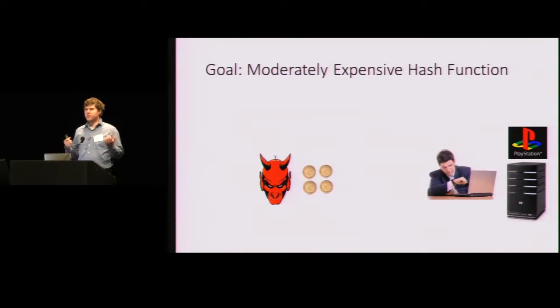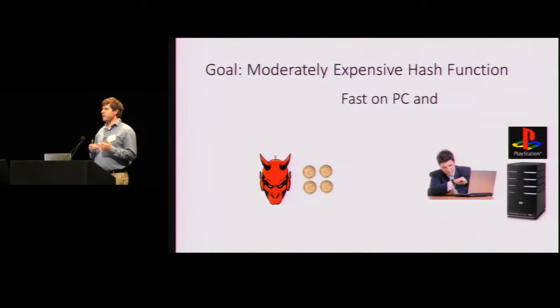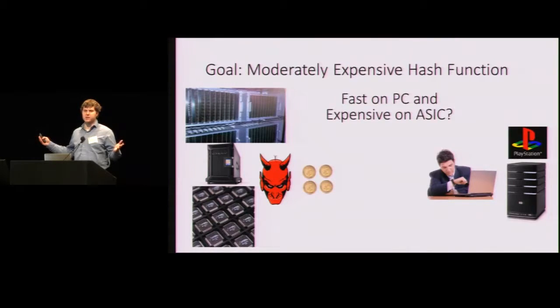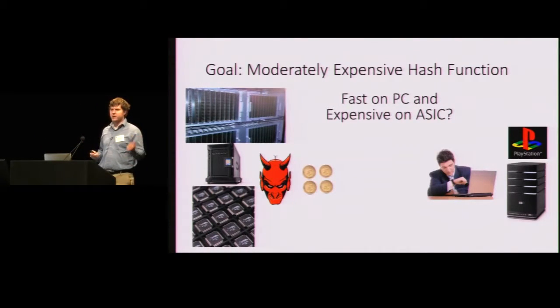So this motivates the goal of developing moderately expensive hash functions. We have two kind of contradictory requirements here. We want a function that can be computed fast on your own personal computer. And we also want a function that's expensive for the adversary to compute even on customized hardware that he might purchase, like that AmpMiner S9.